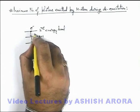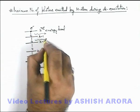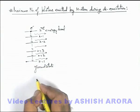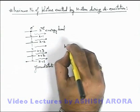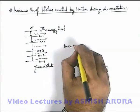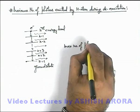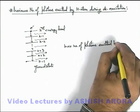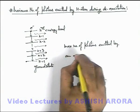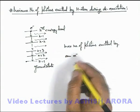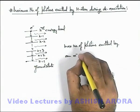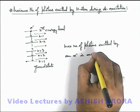In this situation it will emit 1 photon corresponding to each transition to the neighboring energy level or orbit. So we can say if we talk about maximum number of photons emitted by an electron or by a hydrogenic atom in which the de-excitation of electron is taking place is equal to...